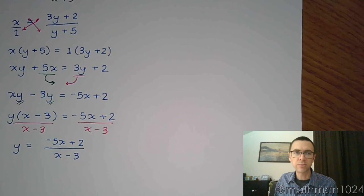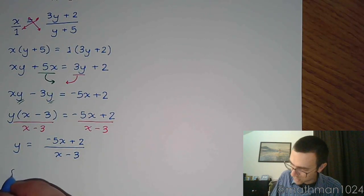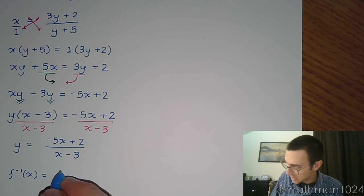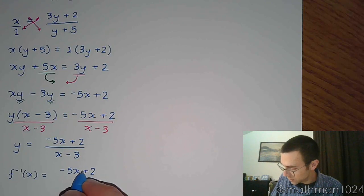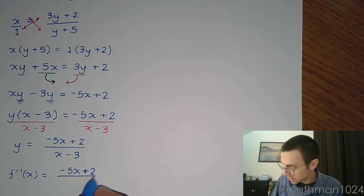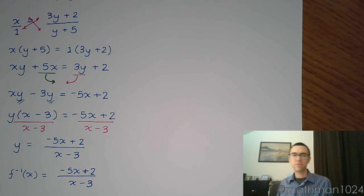So we have y by itself, and the last step is to rewrite this. So f inverse is equal to (-5x + 2)/(x - 3). And that's your inverse.